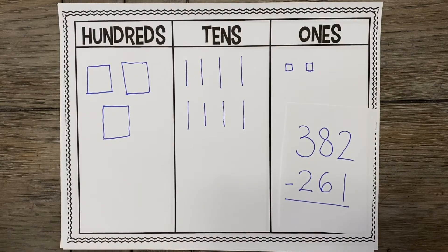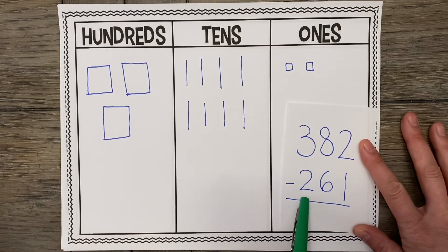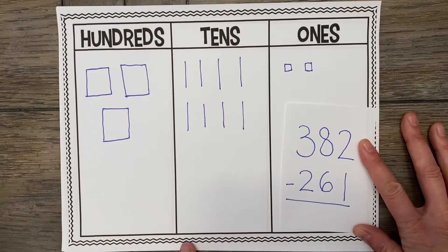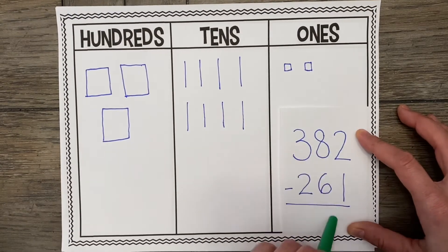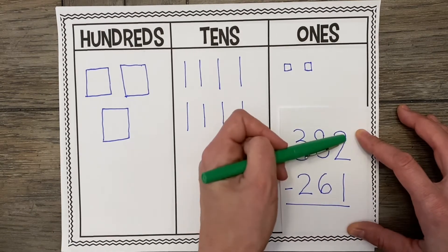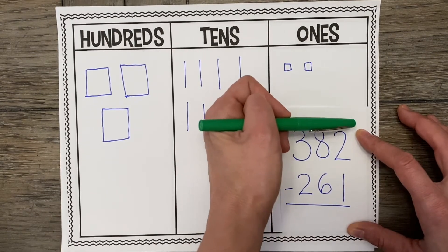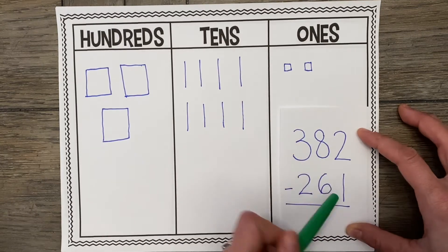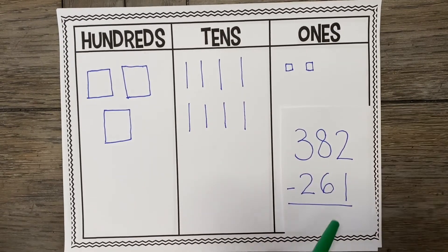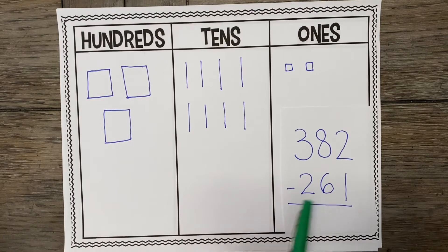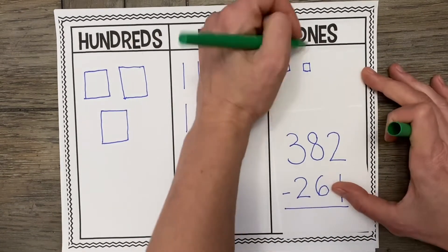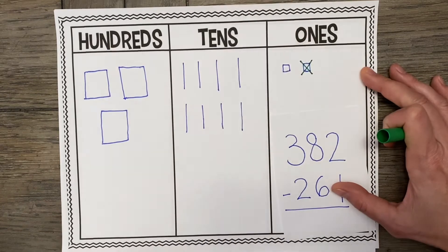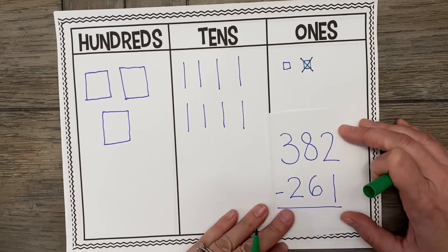Alright friends, now it's time for us to take away. So we are now going to subtract 261. Now where do we start in a subtraction problem? That's right, we always start with our 1s. And we have to remember that we always work our way from top to bottom. We cannot reverse the order. So we are going to take away 1 of our 1s. I'm going to cross that out now.